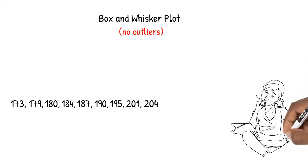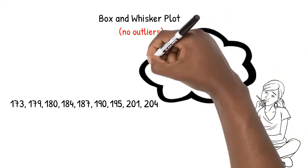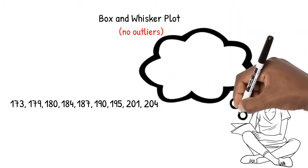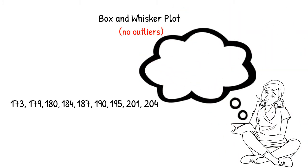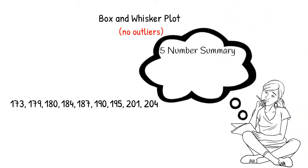In this video, we will look at how to draw a box and whisker plot when we don't have any outliers. In a previous video, we looked at the weights of 9 men and found the 5-number summary. We will need these 5 values in order to draw our box and whisker plot, so let's do a quick review.